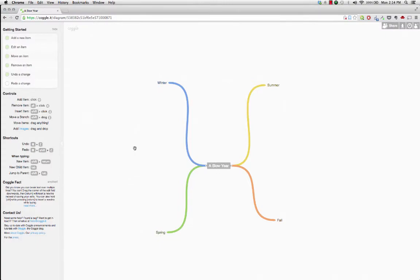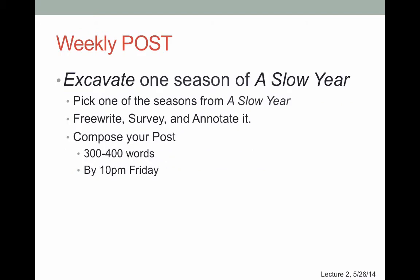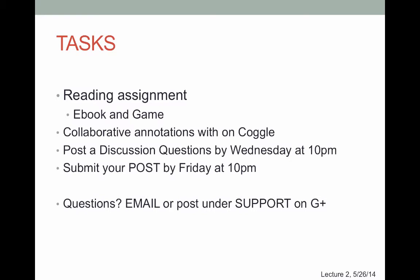Once you've annotated 'A Slow Year' sufficiently with your classmates, your weekly post is to excavate one season of 'A Slow Year' — pick any of the four seasons. Go through our process of free writing, go back over your free writing to pull out the most relevant or interesting information, annotate it — you'll have already participated in the collaborative annotation — then compose your post: 300 to 400 words as usual, due by 10 pm on Friday. If you want to use or make screenshots, go right ahead. Your tasks: read the ebook and play the game, do collaborative annotations on Coggle, post a discussion question by Wednesday at 10 pm, and submit your post by Friday at 10 pm.